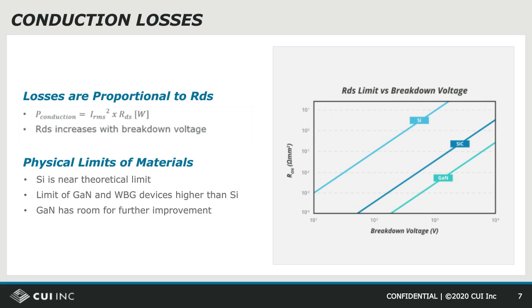Conduction losses are the simplest of the two to understand. They occur when the switch is fully on. In this state, the switch resembles a resistor, which is called RDS, and the losses are equal to the resistance times the RMS current squared. Conduction losses are proportional to the RDS value, and we therefore desire it to be low. The curve shown represents the theoretical limit of RDS per unit of die size with respect to the breakdown voltage — the lowest value of RDS that can be achieved for a given breakdown. MOSFETs have been decreasing RDS steadily for decades, but they're fast approaching this theoretical limit. For GaN, the naturally higher breakdown voltage means that for a given breakdown, the RDS of GaN is much lower, and its theoretical limit is much further to the right, meaning further improvements are expected for some time to come.